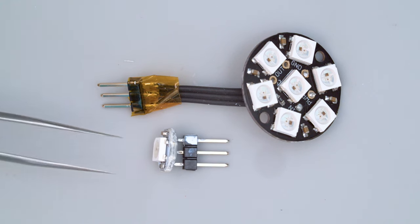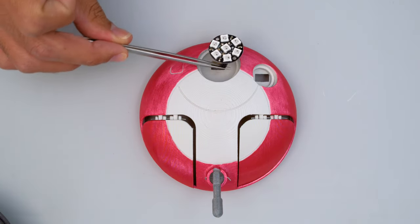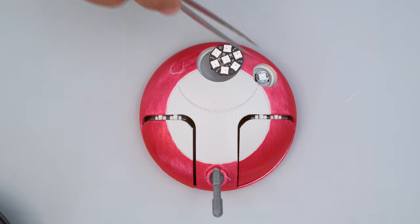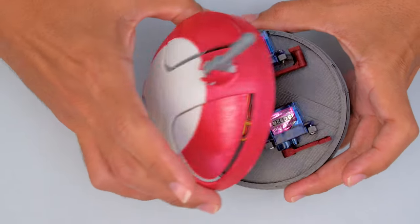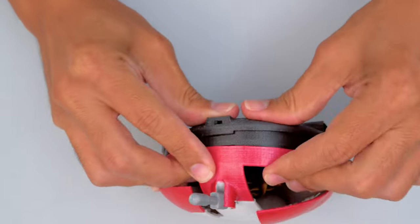Wire up the NeoPixels to some header pins and install them into the two sockets so the wires can be connected together on the other side. With all the electronics connected the body can then be snap fitted together.